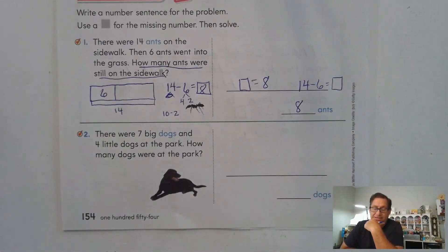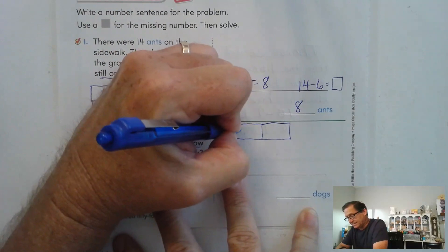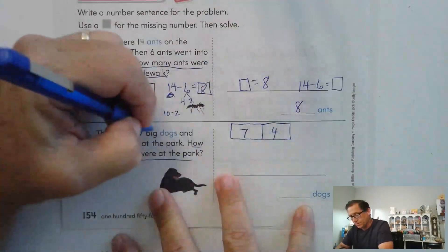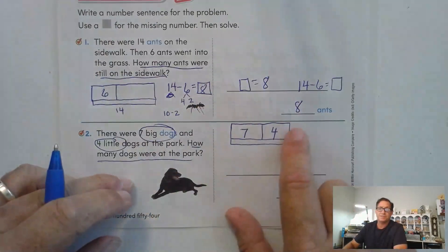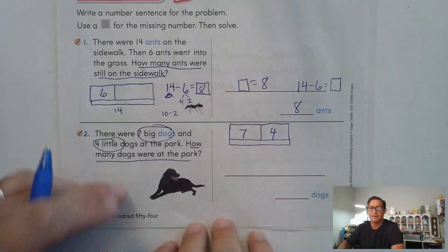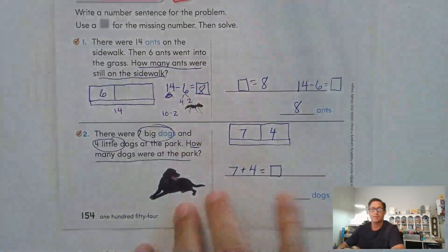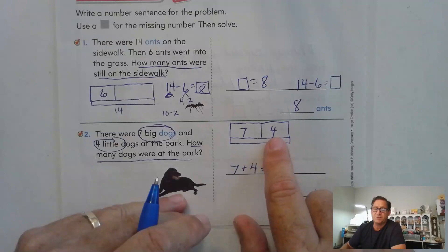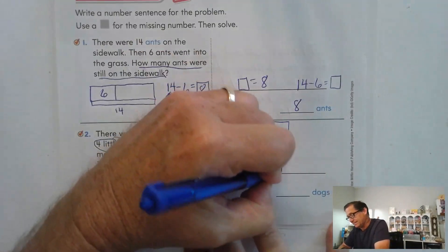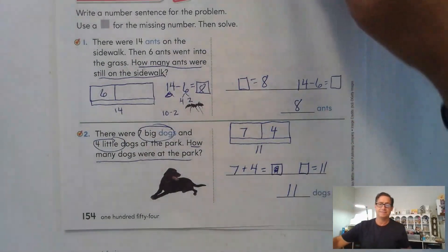Number 2: There were 7 big dogs and 4 little dogs at the park. How many dogs were at the park? So 7 big dogs plus 4 little dogs will tell me how many dogs total. My number sentence is an addition problem: 7 plus 4 equals something. I know that 7 plus 3 is 10, and 4 is just one more than 3, so 7 plus 3 plus one more is 11. There are 11 dogs at the park.